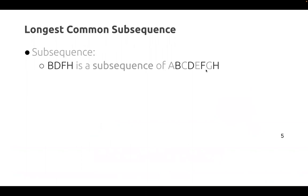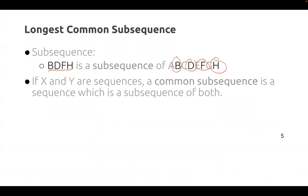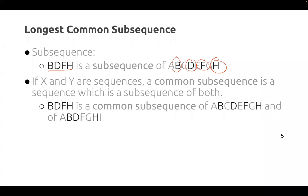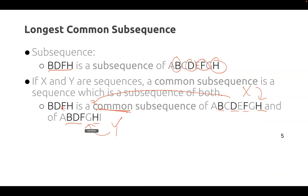For example, B, D, F, H is a subsequence of A, B, C, D, E, F, H because you have B, D, F, and then H. If X and Y are sequences, a common subsequence is a sequence which is a subsequence of both. So B, D, F, H is a common subsequence of both A, B, C, D, E, F, G, H and A, B, C, D, F, G, H, I. So we say this subsequence is common between X and Y.